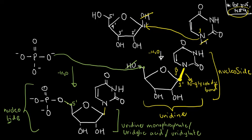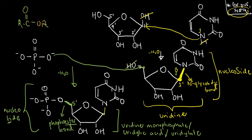Now let's look at the bond between the sugar and the phosphate — this one is called a phosphoester bond. It's called that because it resembles an ester. Remember, an ester is R-C(=O)-OR. This one, in a way, is like that: P(=O)-OR. But instead of carbon, we have phosphate — so we call it a phosphoester. N-glycosidic bond is for the bond between sugar and base; phosphoester is for sugar and phosphate.